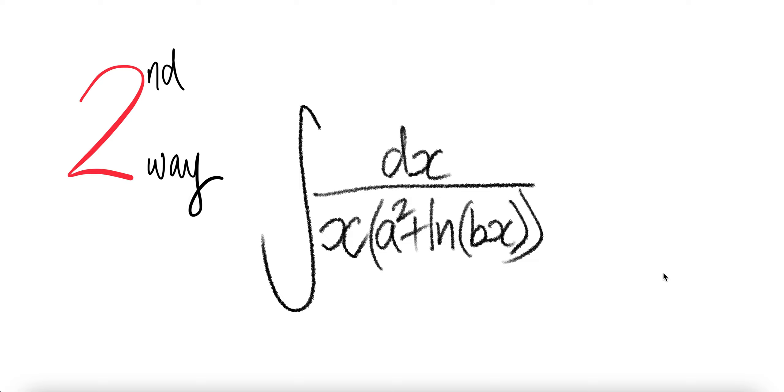Hello, welcome everyone. Let's look at the second way to get this integral: 1 over x times a squared plus ln(bx), where a and b are constants.